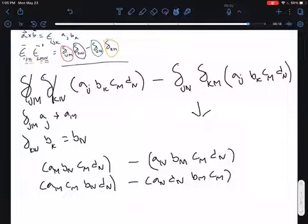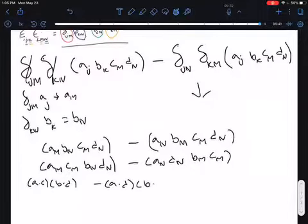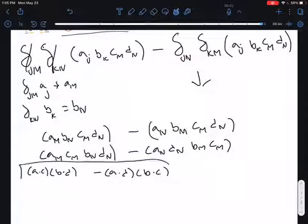So now it kind of becomes a lot more clear because when you have the same indices, you have a dot product, right? So then this becomes A dot C, then we have B dot D minus A dot D and B dot C. And there we just proved how to solve this proof using index notation.